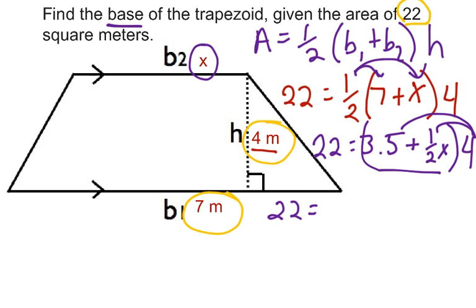So we have 4 times 3 1/2, which when we multiply would give us 14, 3 1/2 times 4. Move the decimal once.